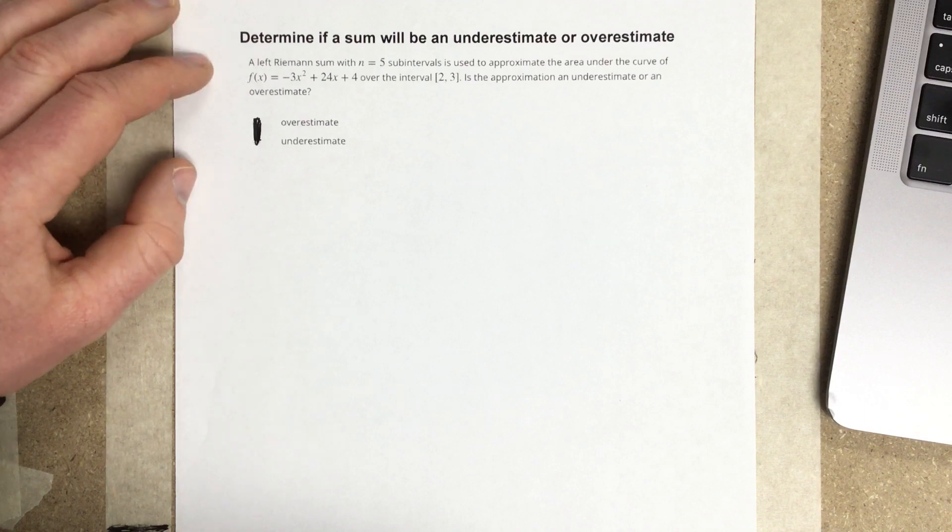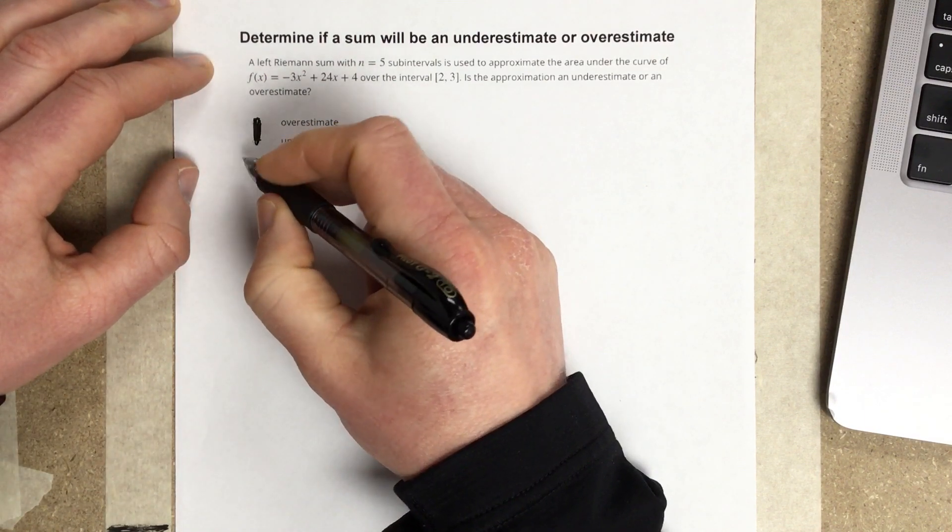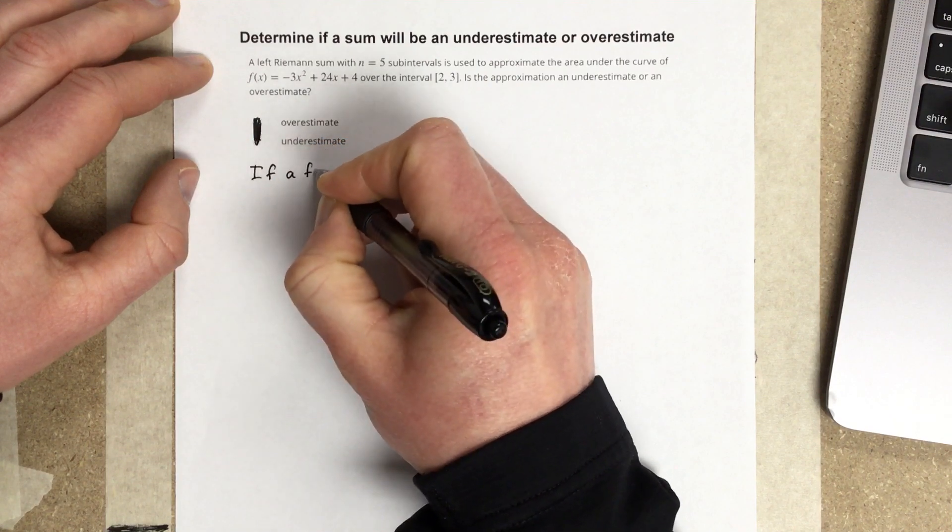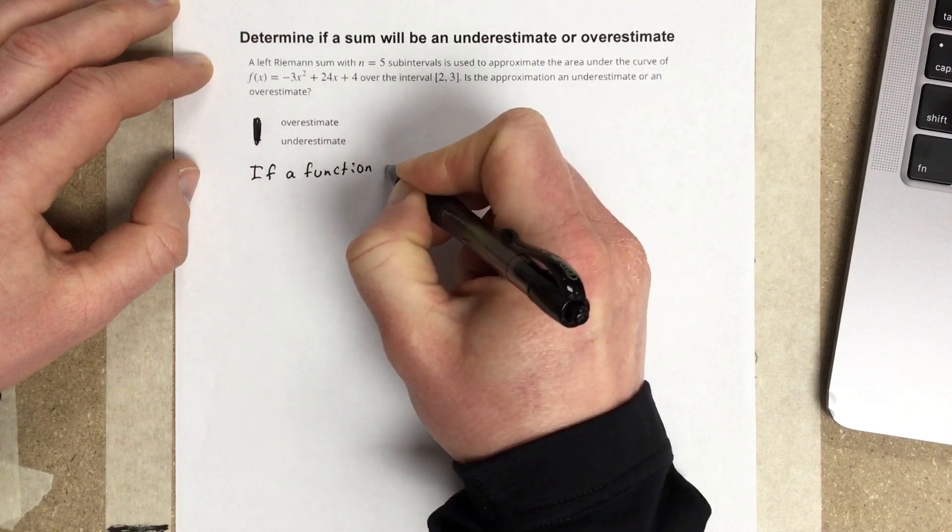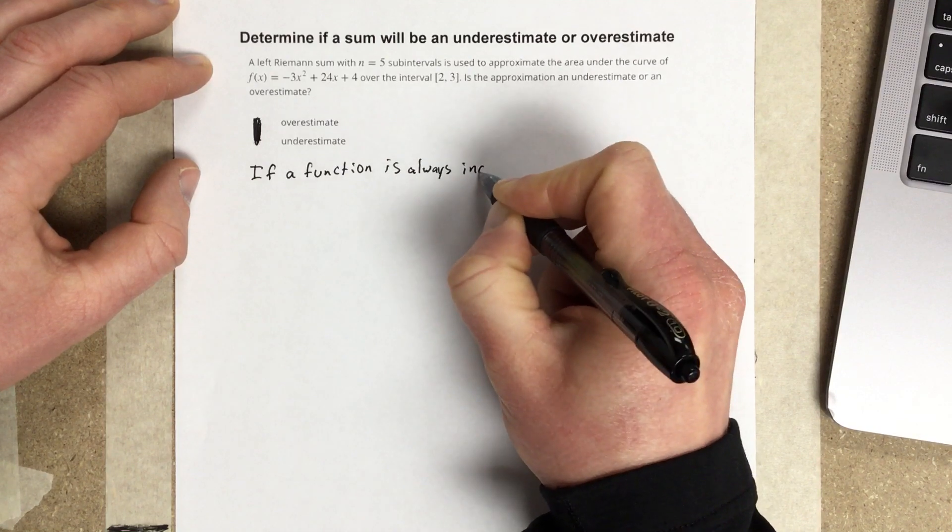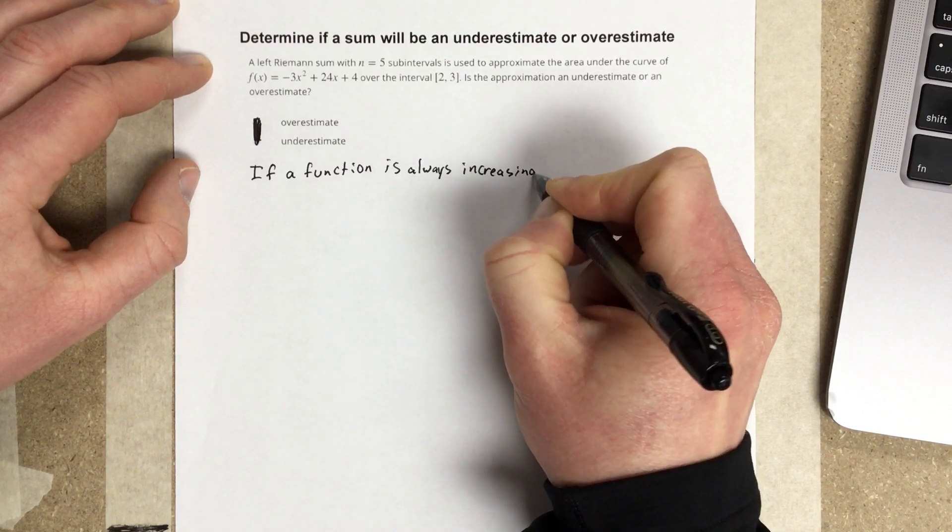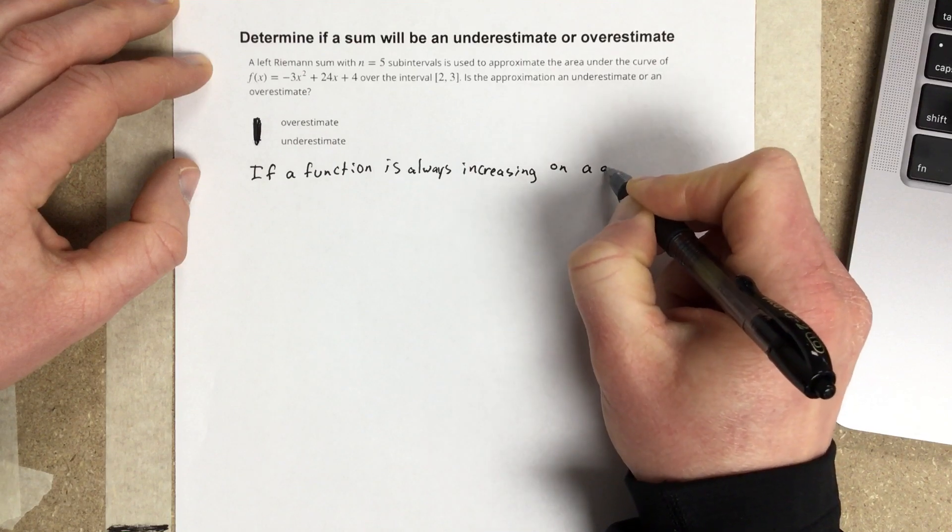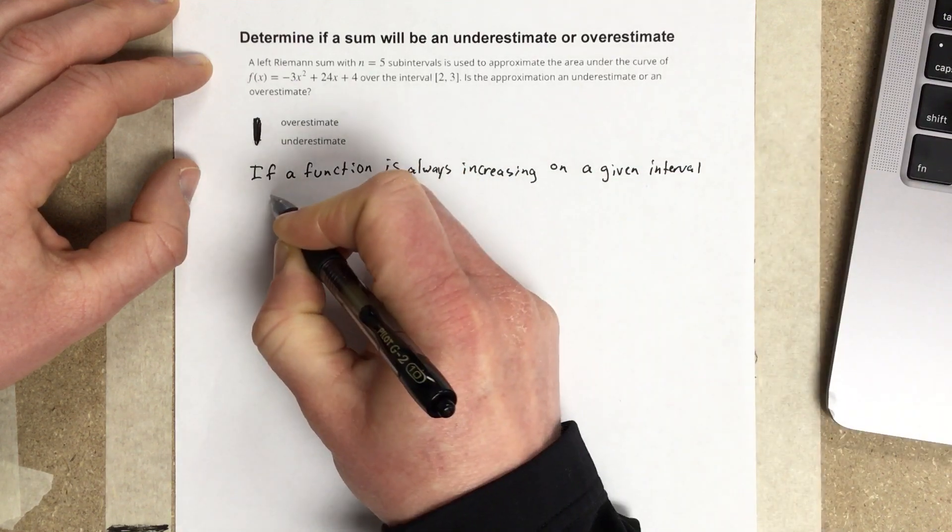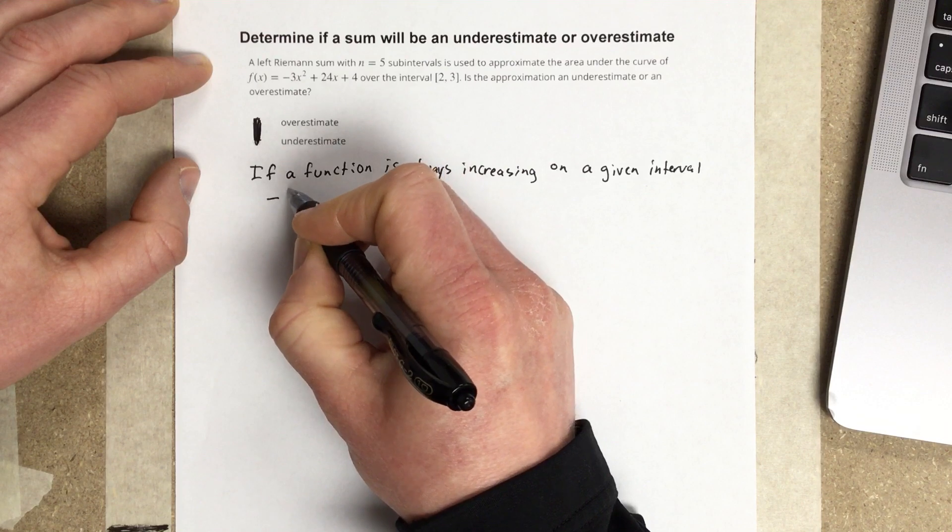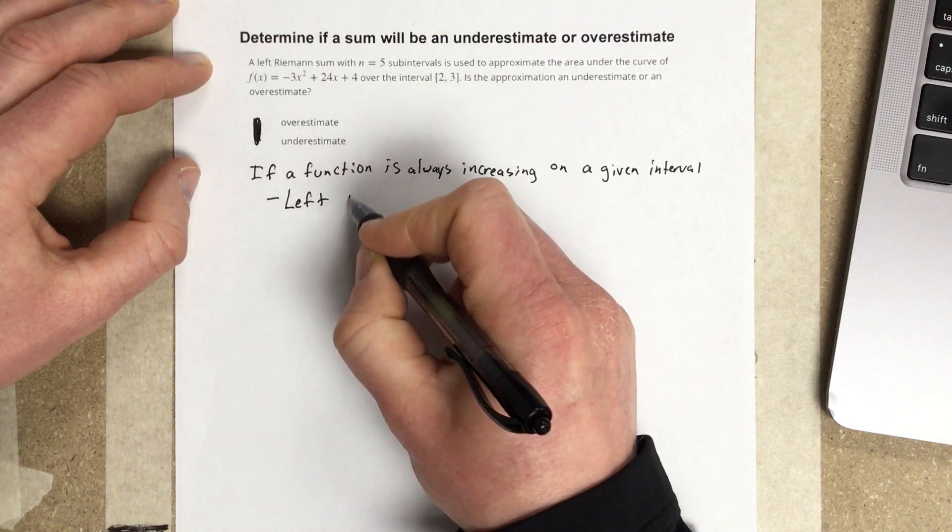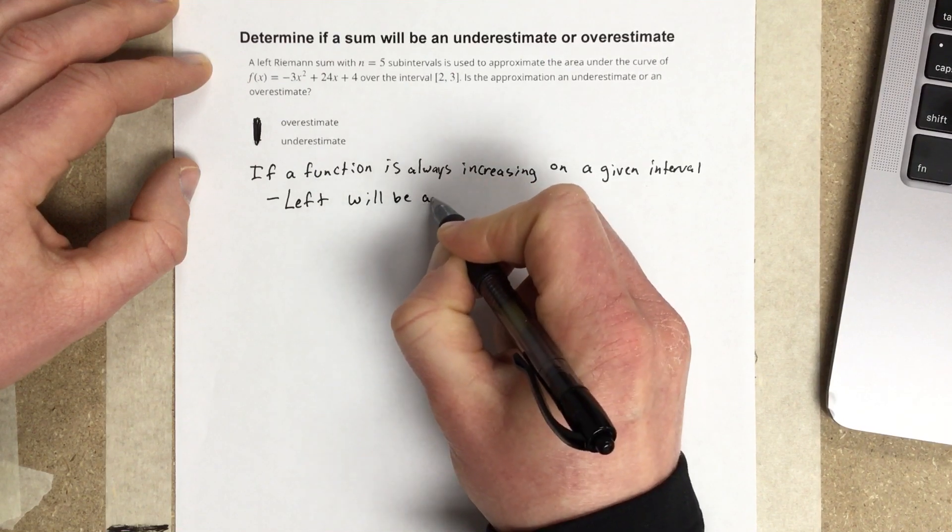We can figure this out without doing too many calculations. I'm going to write out some information. If a function is always increasing on a given interval, then if we have a left Riemann sum, left will be an underestimate.